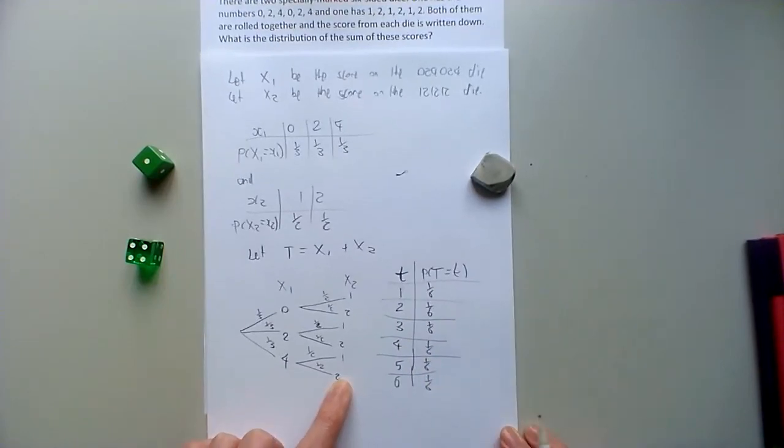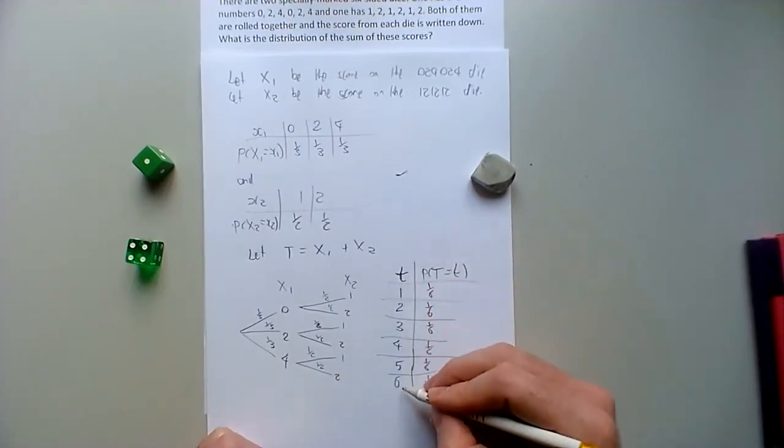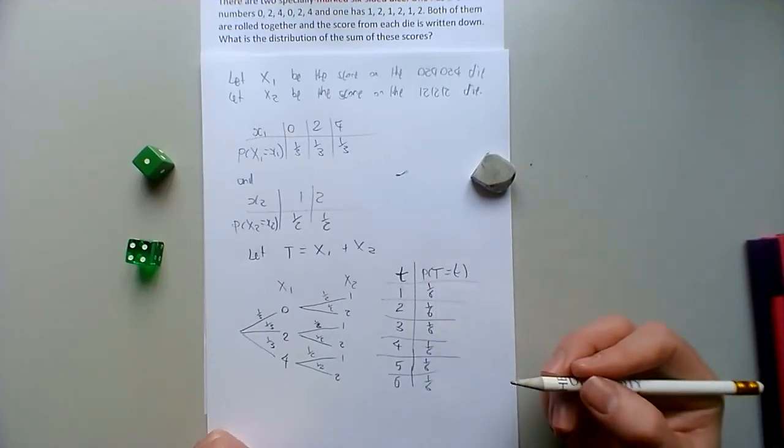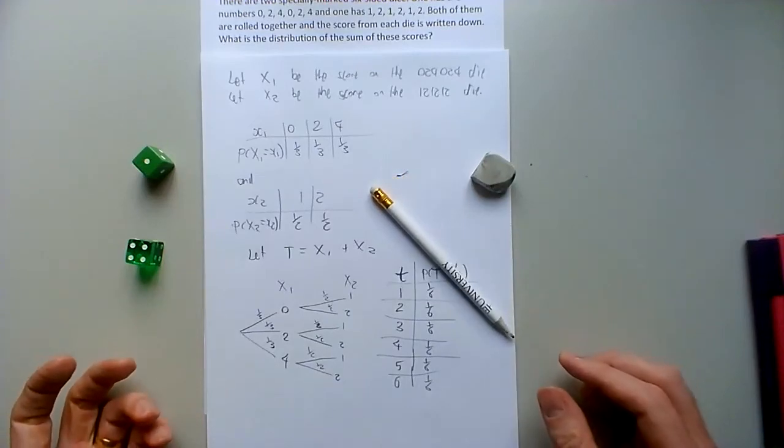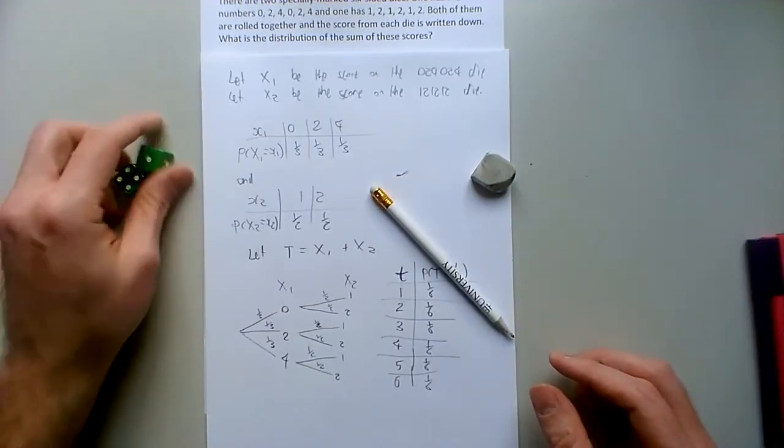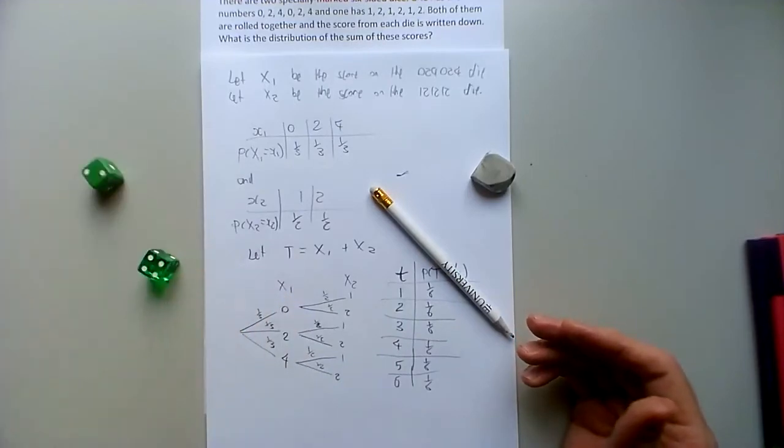So my distribution is that t can be the numbers from 1 to 6, with probability 1 sixth each time. That's the same as an ordinary die. So that's telling me that when I roll these two dice, it's exactly the same as if I just roll one ordinary die.